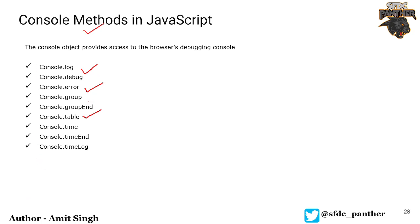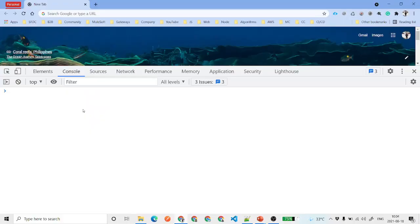The important methods include console.debug, console.group and groupEnd, console.time, timeEnd, and timeLog. These are very important methods, and I'm also going to talk about when to use which method. Let's quickly see how we can use all of them.